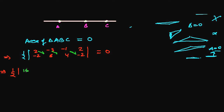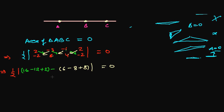Now going southeast: 2 times 8 is 16, minus 3 times 4 is -12, and -1 times -2 is +2. Then minus, going southwest: -3 times -2 is +6, 8 times -1 is -8, and 4 times 2 is 8. So we have one-half of: 16 minus 12 is 4, plus 2 is 6; then minus: 6 minus 8 is -2, plus 8 is 6. So 6 minus 6 equals zero.